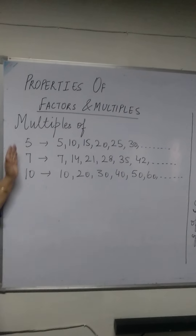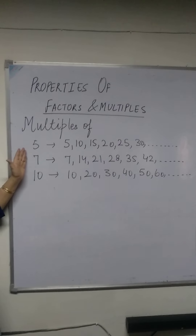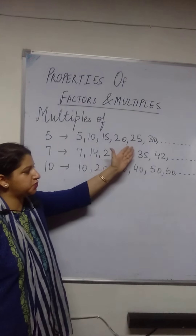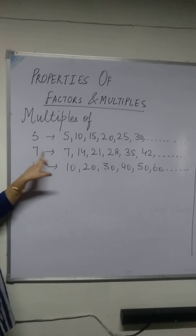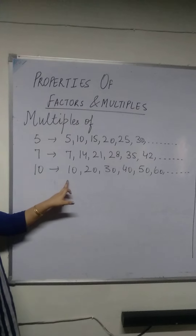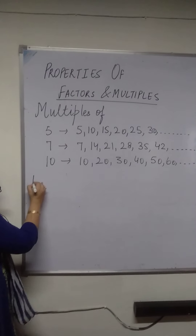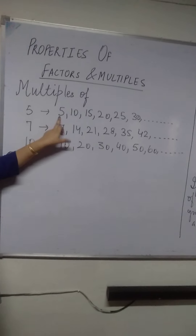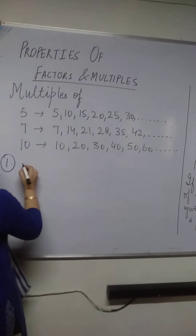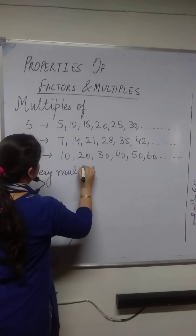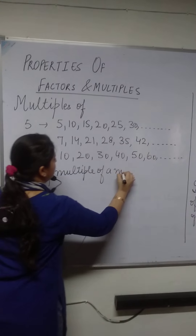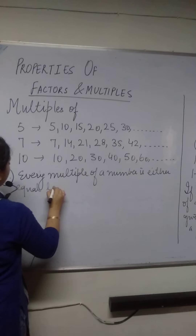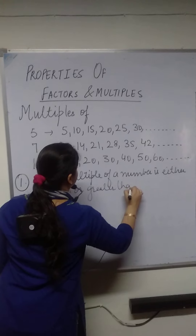Now let us do some properties of multiples of a given number. I have written some multiples of 5, 7, and 10. You look for the multiples of 5 — it begins with 5, 10, 15, 20, 25, 30, and so on. Of 7, it begins with 7, and of 10, it begins with 10. So the first property of multiples of any number is: every multiple of a given number is either equal to or greater than the given number.